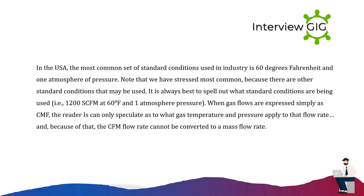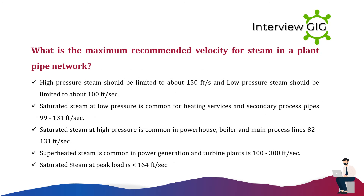What is the maximum recommended velocity for steam in a plant pipe network? High-pressure steam should be limited to about 150 feet per second and low-pressure steam to about 100 feet per second. Saturated steam at low pressure, common for heating services and secondary process pipes, is 99 to 131 feet per second. Saturated steam at high pressure, common in powerhouse boilers and main process lines, is 82 to 131 feet per second. Superheated steam, common in power generation and turbine plants, is 100 to 300 feet per second. Saturated steam at peak load is less than 164 feet per second.